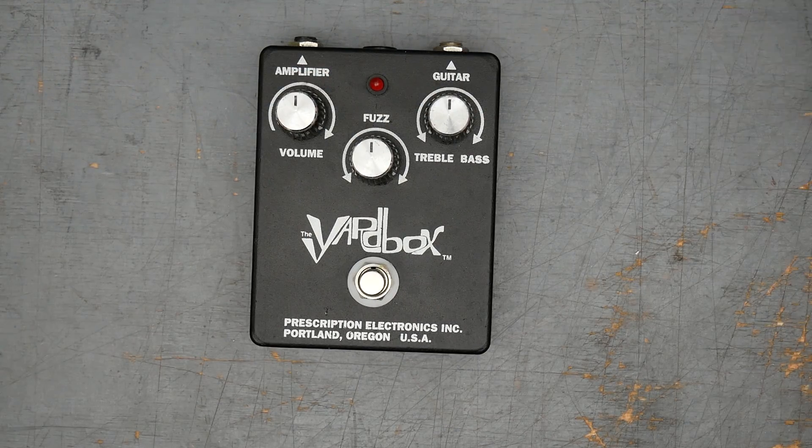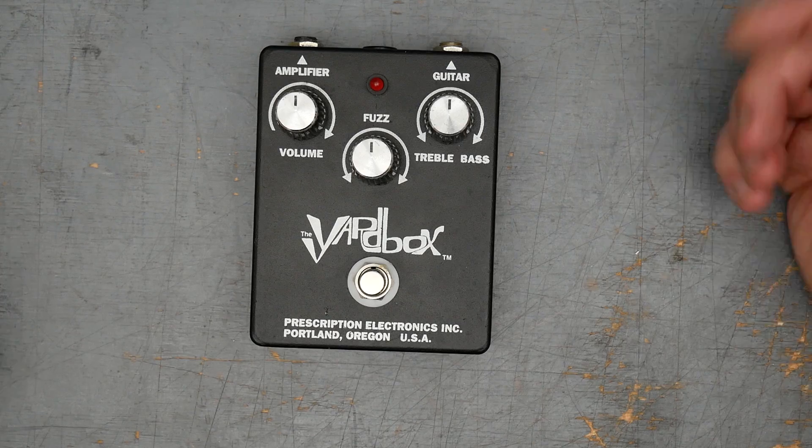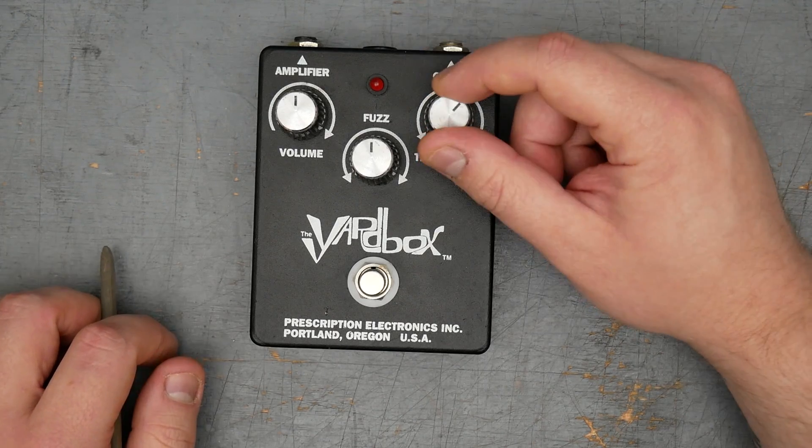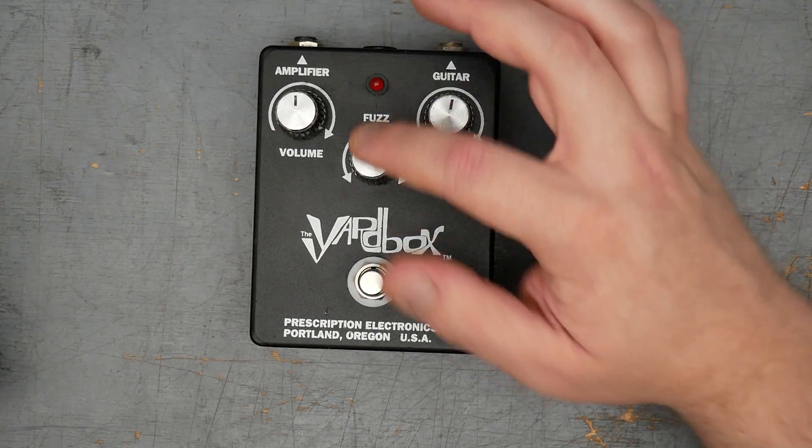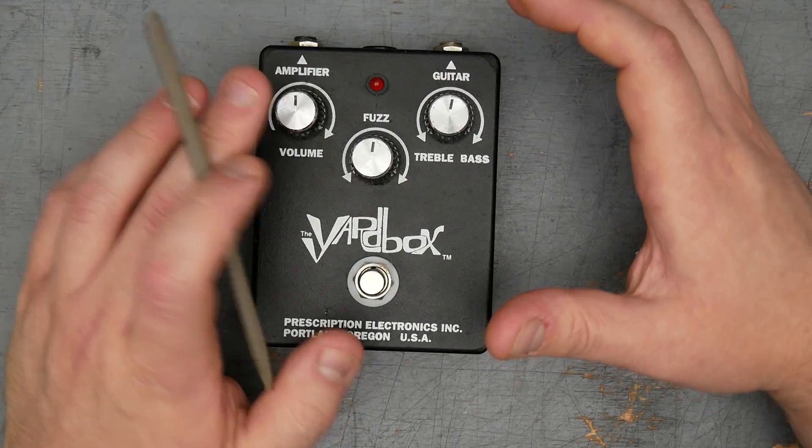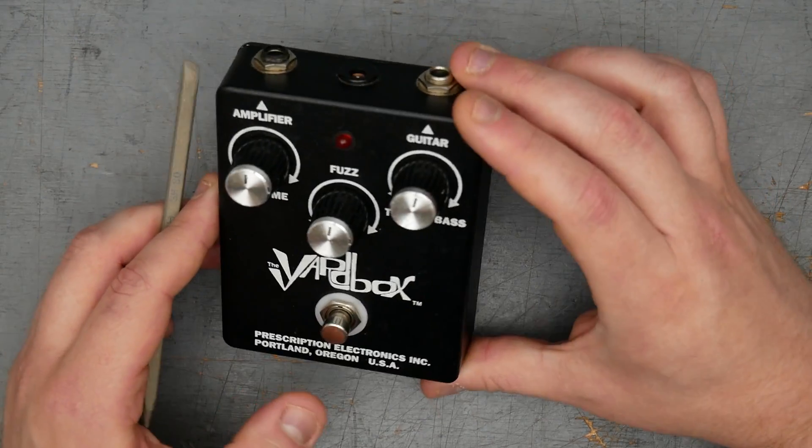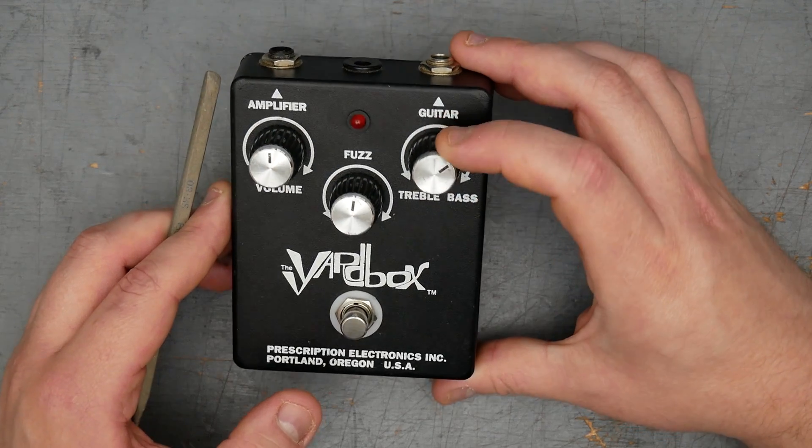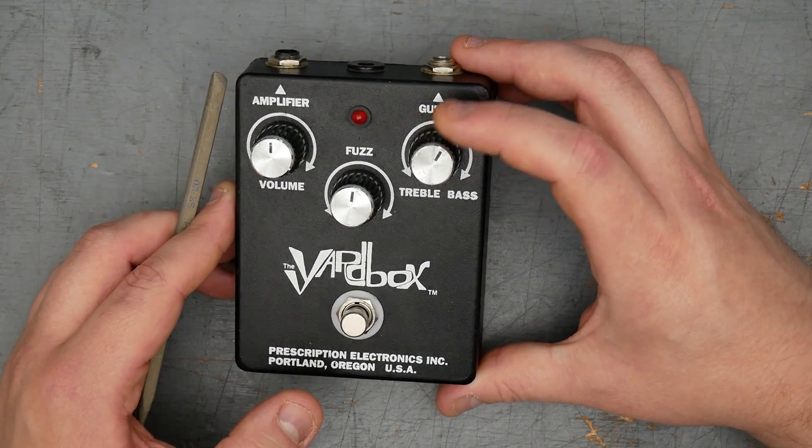The Yardbox here is a three-knob tonebender clone, or derivative at least. And the treble bass control is essentially a Big Muff tone control. And then you have your fuzz control, which is just like the standard tonebender Mark III and volume control. The knobs are what I think of as the Marshall-style knobs, like what you would see on a Marshall Plexi.